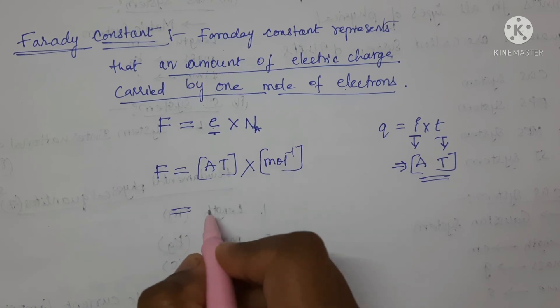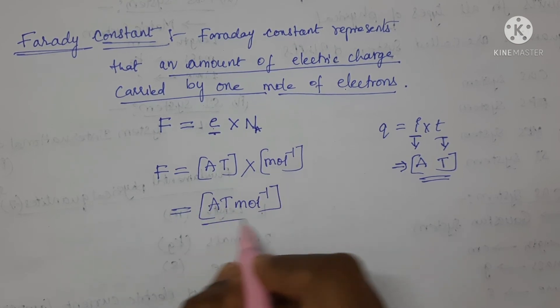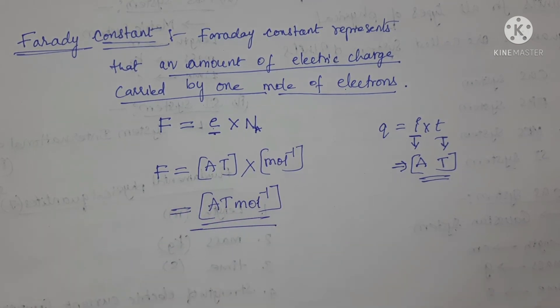Now the dimensions of the Faraday constant are A T mole inverse 1. This is the dimensional formula for Faraday constant.